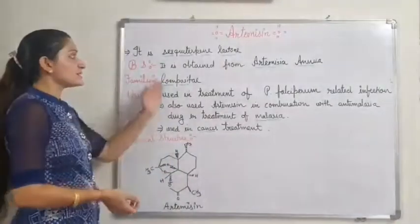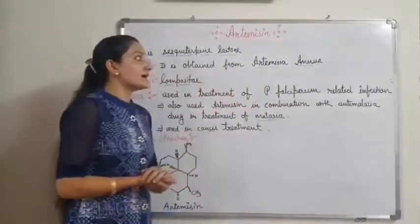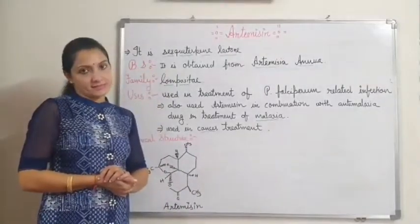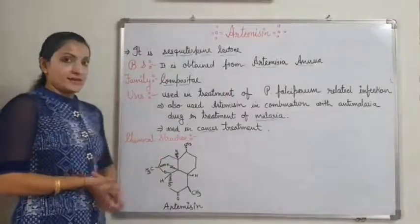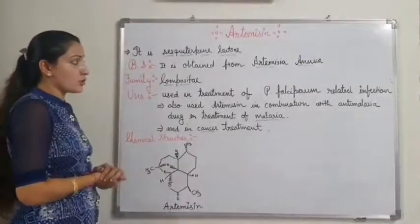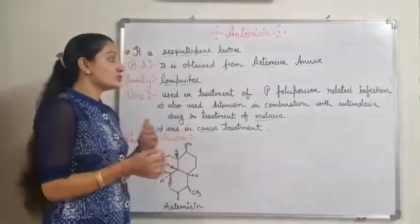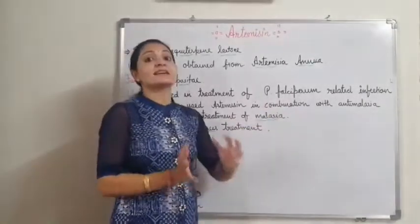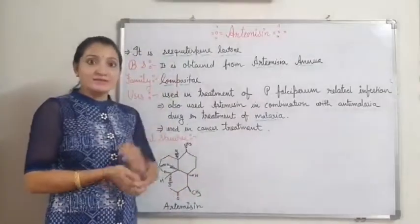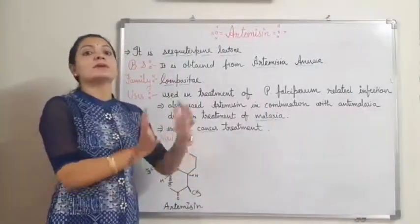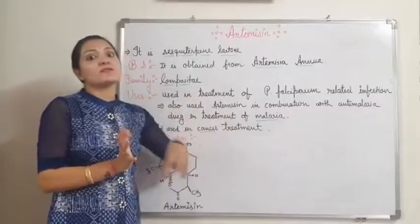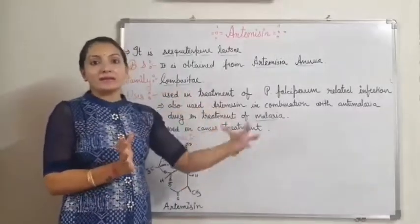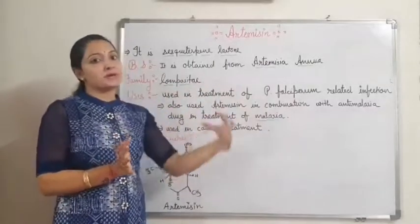Biological source: it is obtained from the plant Artemisia, belonging to family Compositae. Its uses include treatment of malaria, specifically Plasmodium falciparum related infections. It is also used in combination with other anti-malarial drugs for treatment of malaria.